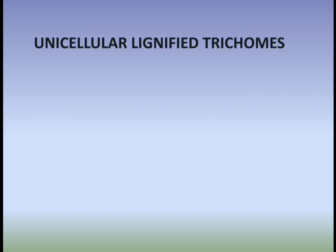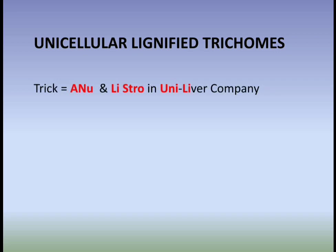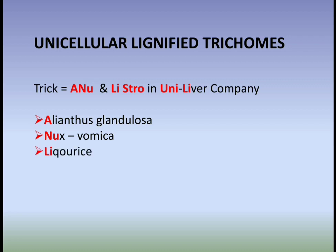Next are unicellular lignified trichomes. The trick is: 'Anu and Listro work in Unilever company.' Here, A denotes Ailanthus glandulosa, Nu denotes Nux vomica, Li denotes Licorice, and Stro denotes Strophanthus. Uni from Unilever denotes unicellular and liver denotes lignified.